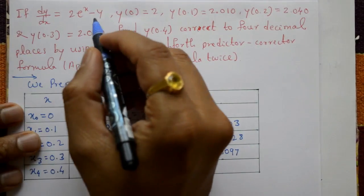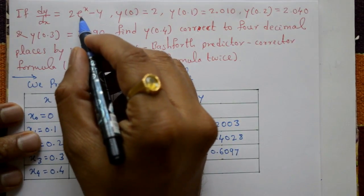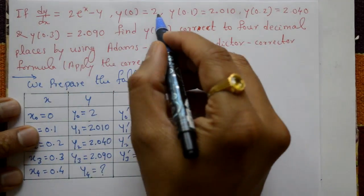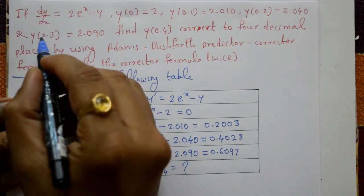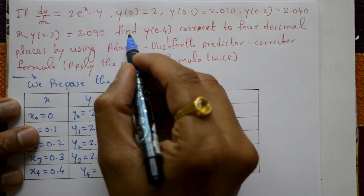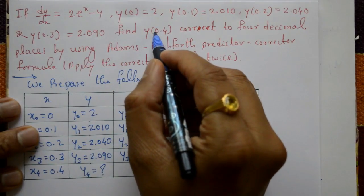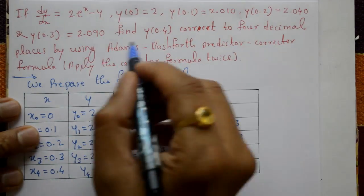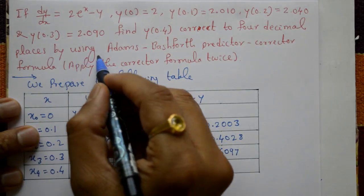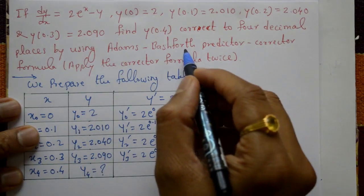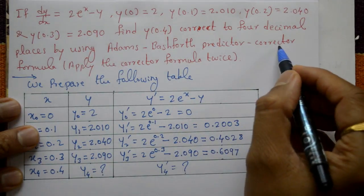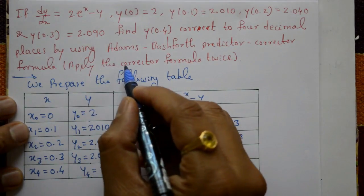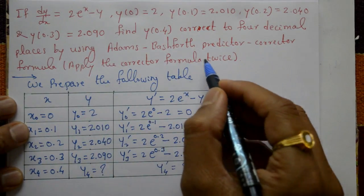If dy/dx is equal to 2 into e raised to x minus y, the values are given. Find y of 0.4 correct to four decimal places by using the Adam-Bashforth predictor-corrector formula. Apply the corrector formula twice.